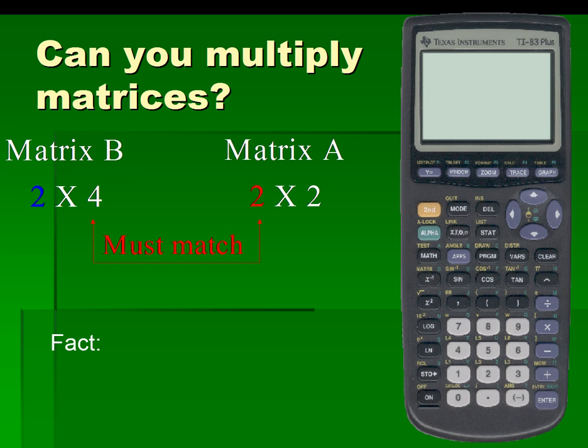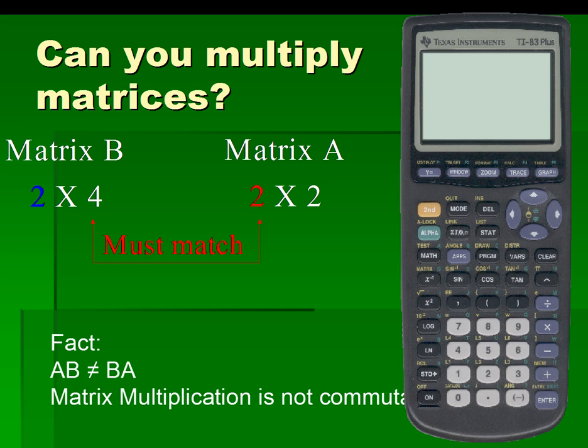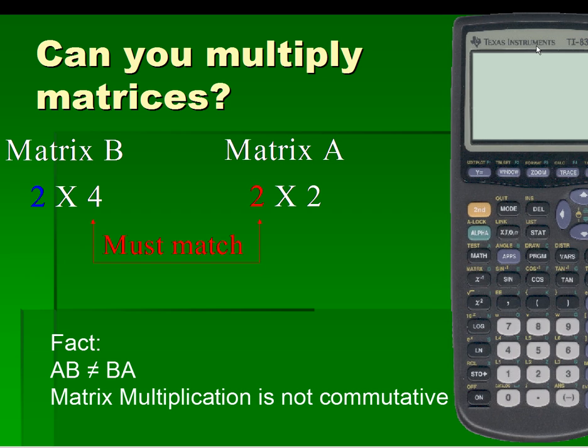Which brings us to an important fact. In matrix multiplication, A times B does not equal B times A, which means that matrix multiplication is not commutative.